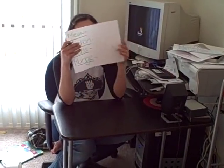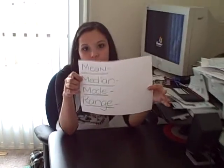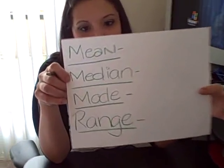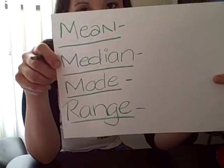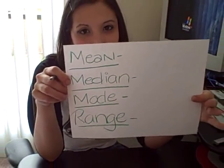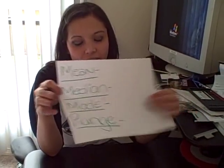Okay, so the dreaded mean, median, mode, and range. Now still to this day, I'm always going to be like, which one's mean, which one's median, and which one's mode, which one's range?